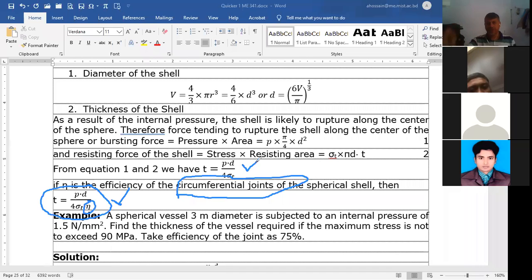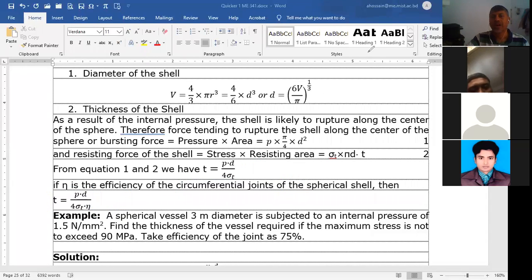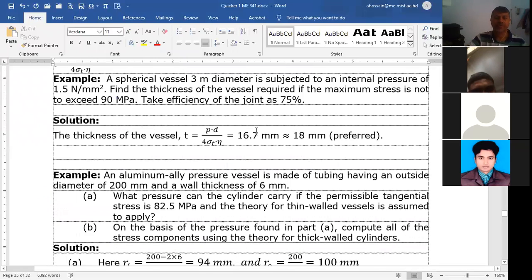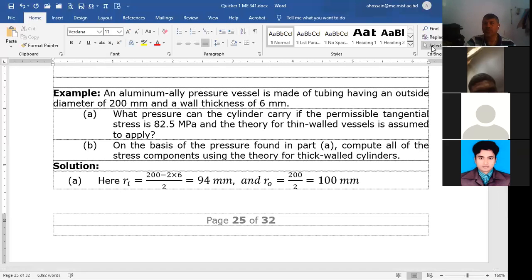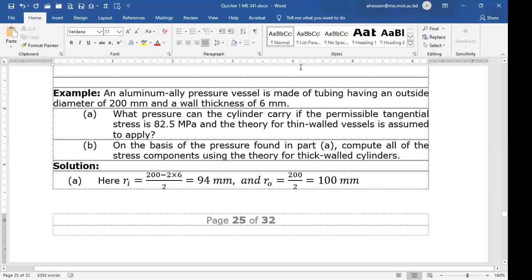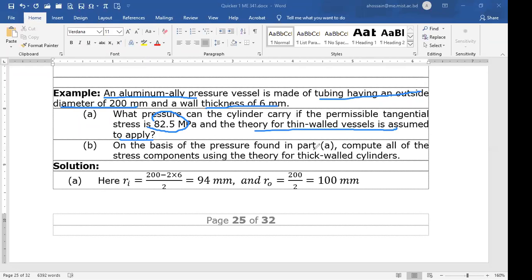Let's look at an example problem. An aluminum alloy pressure vessel is made of tubing having an outside diameter of 200 mm and wall thickness of 6 mm. What pressure can the cylinder carry if the permissible tangential stress is 82 MPa and the theory of thin wall vessel is assumed?